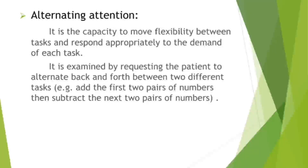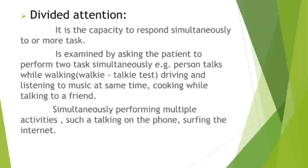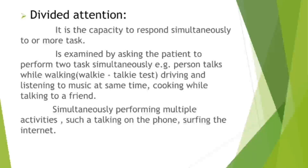Alternating attention is the capacity to move flexibly between tasks and respond appropriately to the demand of each task. It is examined by requesting the patient to alternate back and forth between two tasks — for example, add the first two pairs of numbers, then subtract the next two pairs of numbers. Divided attention is the capacity to respond simultaneously to two or more tasks, examined by asking the patient to perform two tasks simultaneously — for example, talking while walking, driving and listening to music, or cooking while talking to a friend.